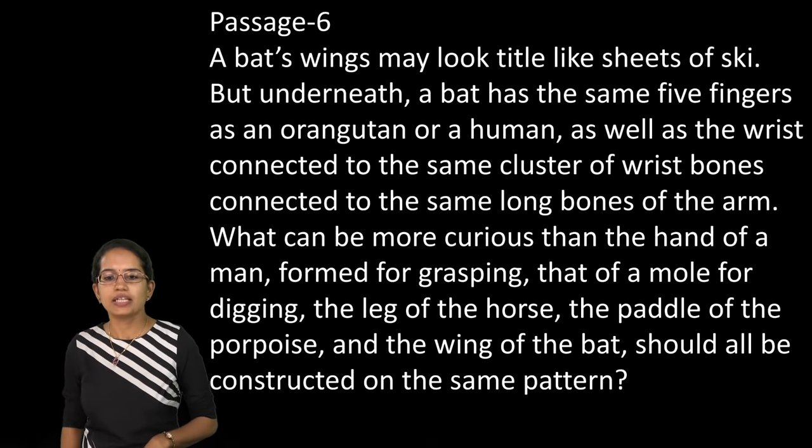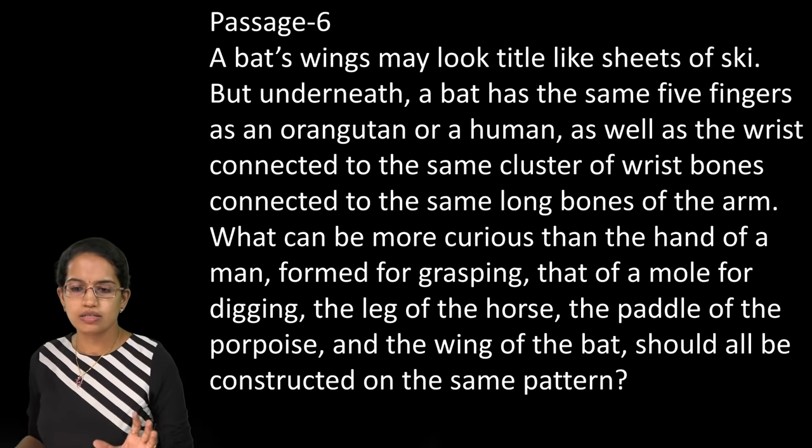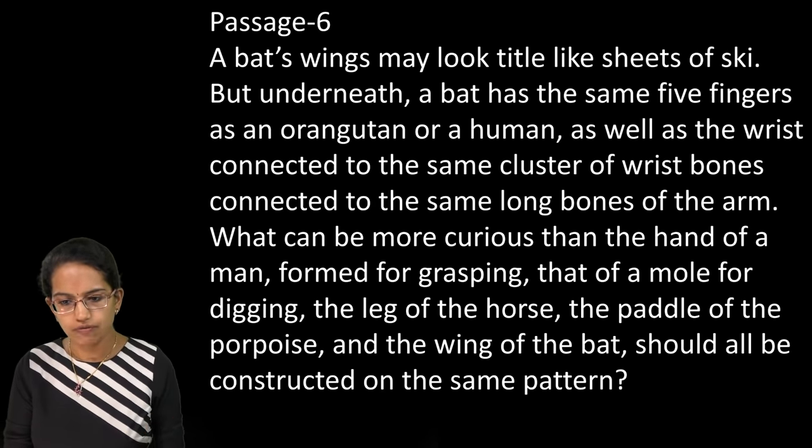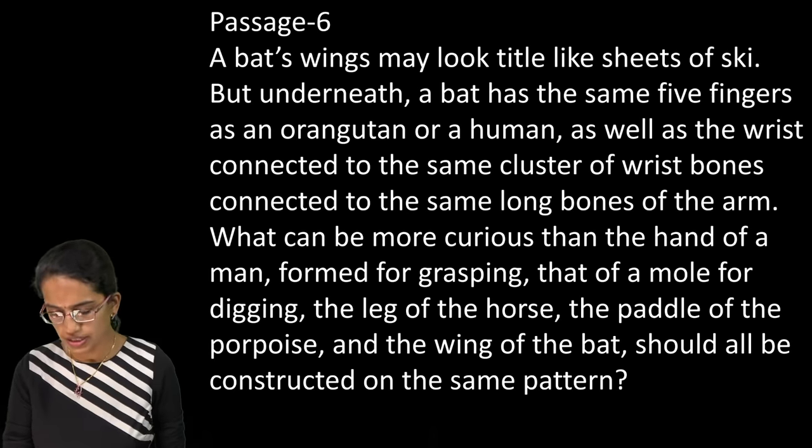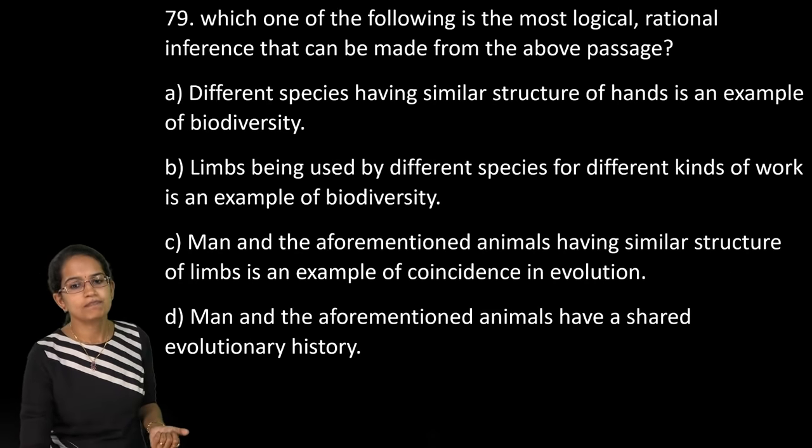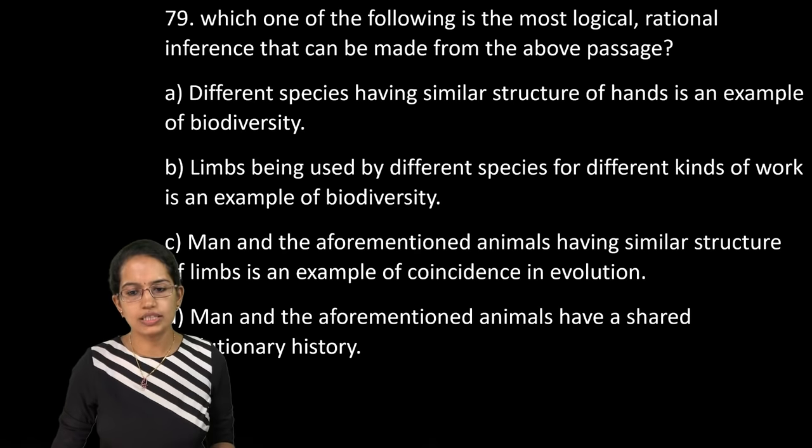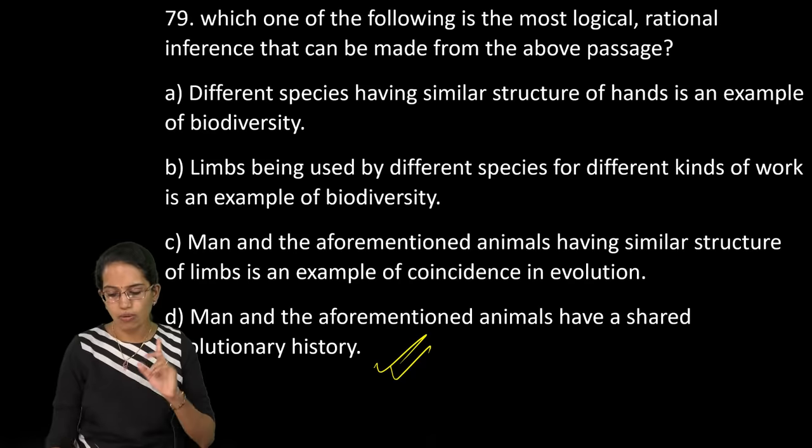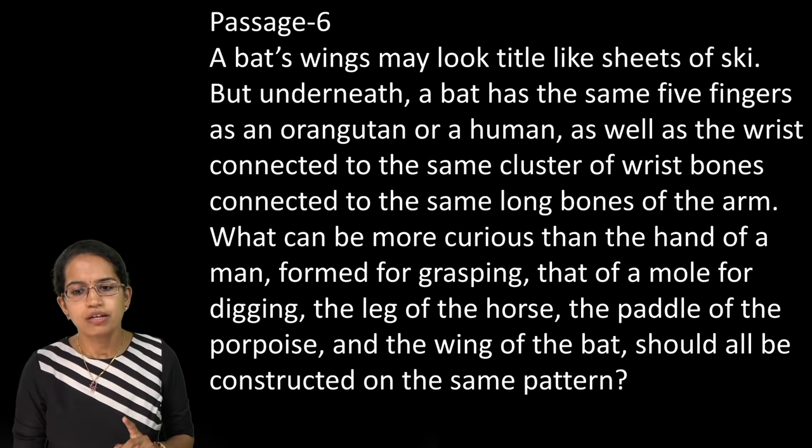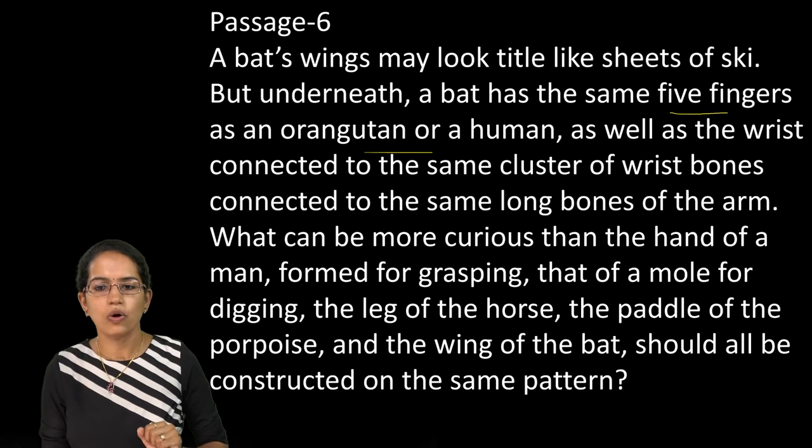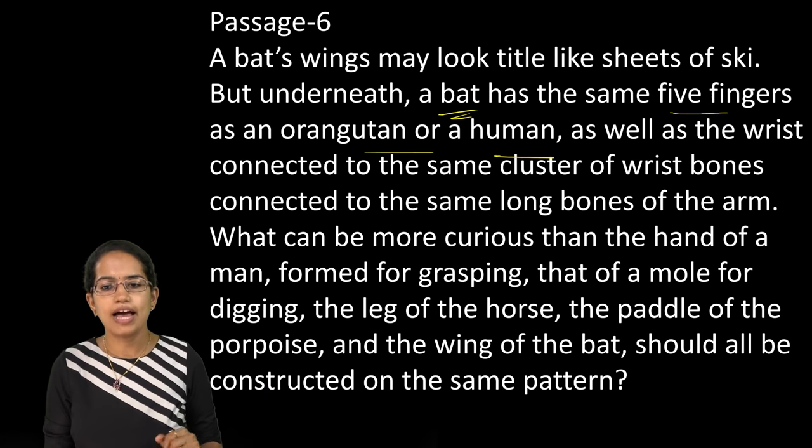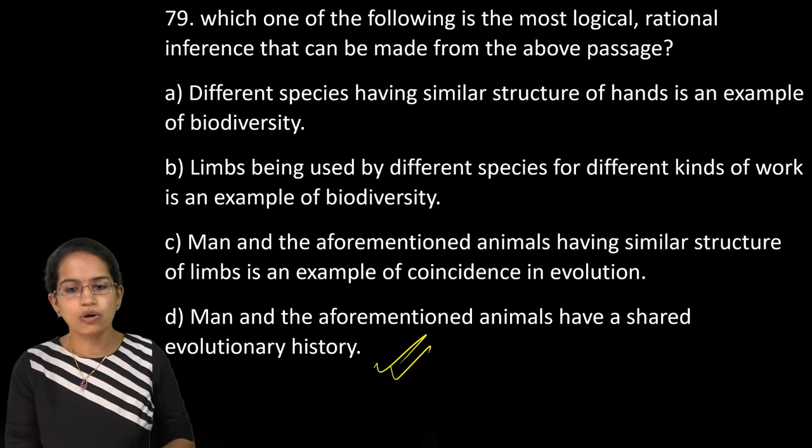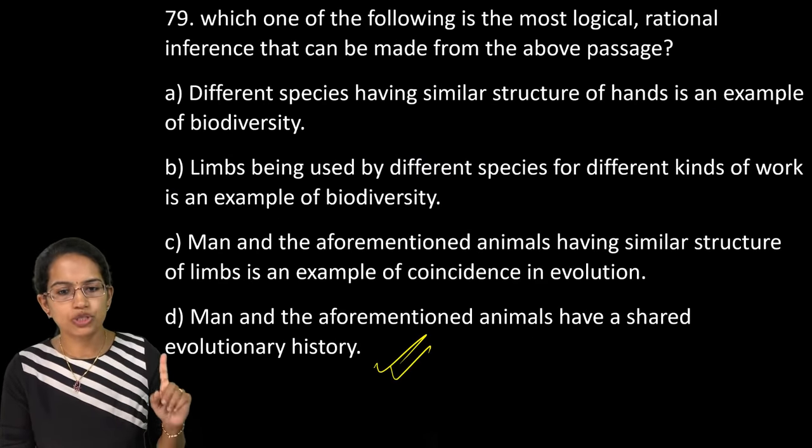The next is article or write up about the bat's wing. How it looks like and how the wings of the bat should be constructed or the basic idea behind it. So the focus is on the evolutionary history that man and bat have a common evolutionary history which talks about the same five fingers as the orangutan or human. So bat having a similar wing feature as the human fingers. So that talks about a common evolutionary history.